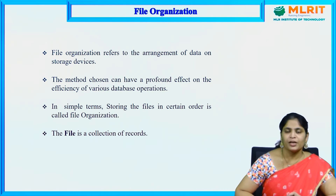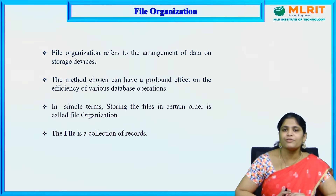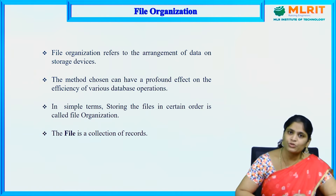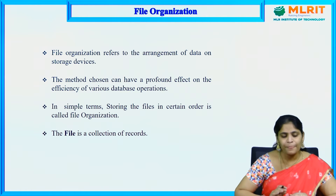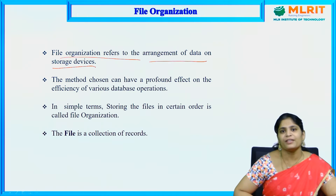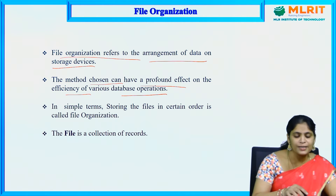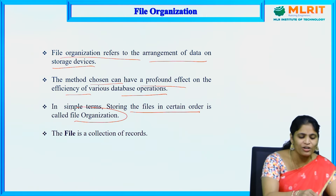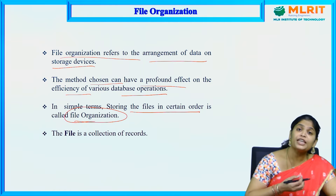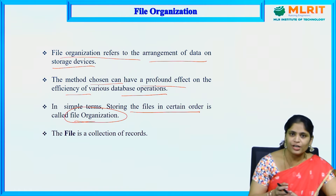Next, the concept of file organization — that means how the files can be organized. Here, file means nothing but records. In all our previous sessions we dealt with relational databases, where data is stored in the form of relations or tables, and within those tables data is stored as records, meaning tuples. File organization refers to the arrangement of data on storage devices. The method chosen can have a profound effect on the efficiency of various database operations. Storing the files in a certain order is called file organization — organizing files sequentially or randomly.